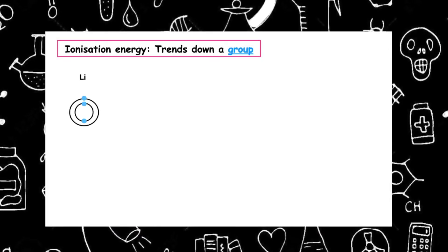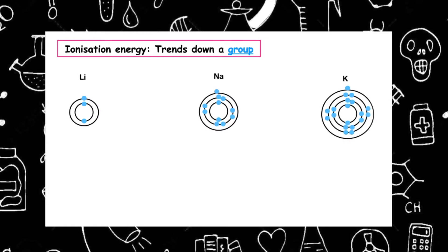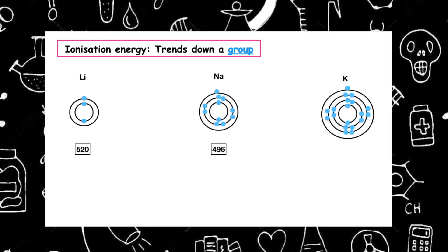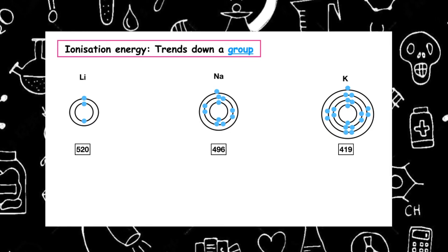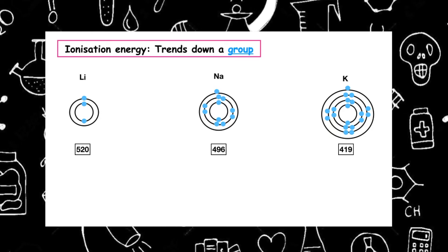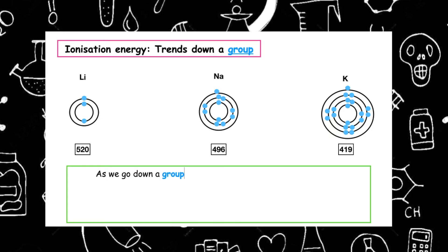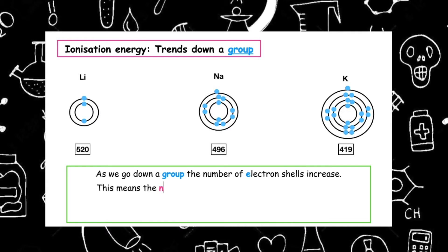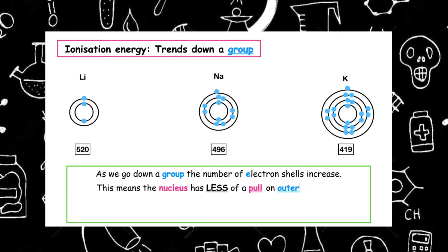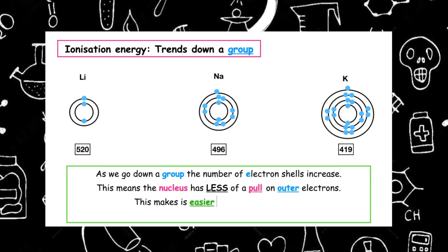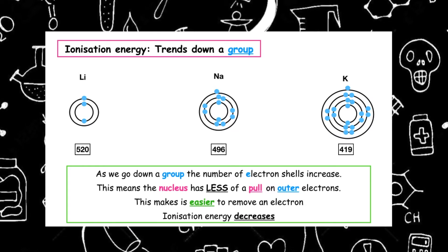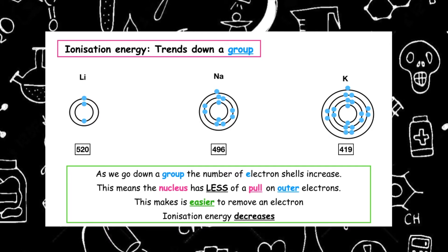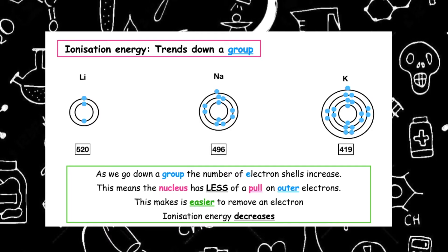Let's have a look at the trends going down a group. If we take group one and draw the electron arrangement diagrams, and select the first ionization energy for each of the elements from lithium to potassium, we can see a trend. As we go down a group, the number of electron shells increase. This means the nucleus has less of a pull on the outer electrons, so the energy required to remove this electron will be easier, and therefore the ionization energy would decrease.